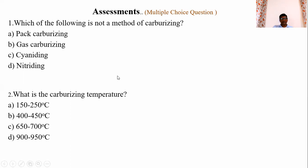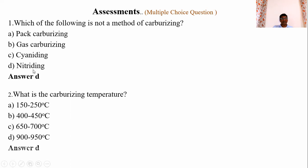Now, let's move on to multiple choice questions. Question 1: Which of the following is not a method of carburizing? Options: pack carburizing, gas carburizing, cyaniding, or nitriding. The answer is D, nitriding. Nitriding is not a carburizing method because in nitriding only nitrogen is diffused, whereas in all the other methods carbon is diffused.